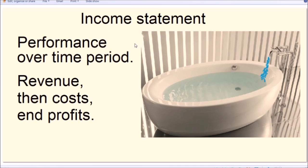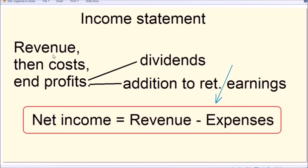Inside an income statement, revenue appears at the top, followed by all costs and expenses that are deducted from revenue, leaving us with net income or profits at the end. Those profits are then divided into dividends paid to shareholders and retained earnings — the portion of profits that stays within the company to help it grow. The retained earnings feed back into the owner's equity section of the balance sheet as additions to retained earnings.